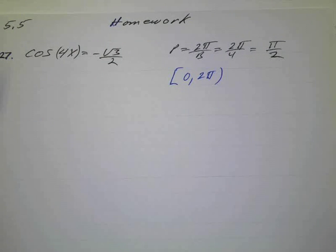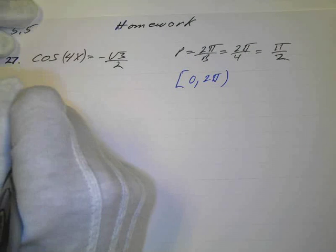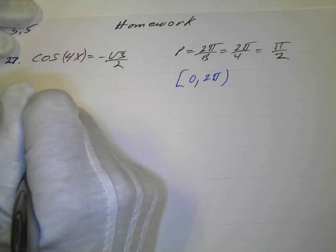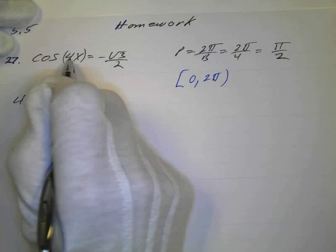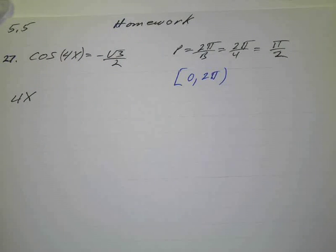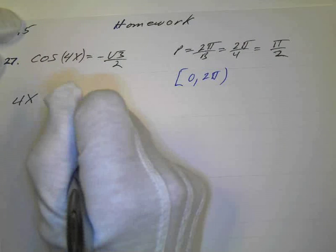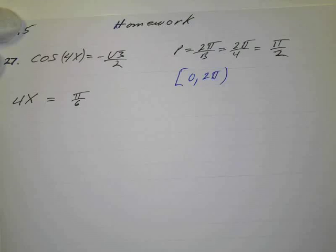So we'll think of this as 4x. So we'll say 4x equals... And the cosine of what angle is square root of 3 over 2? Well, the square root of 3 over 2 would be π over 6. Okay?